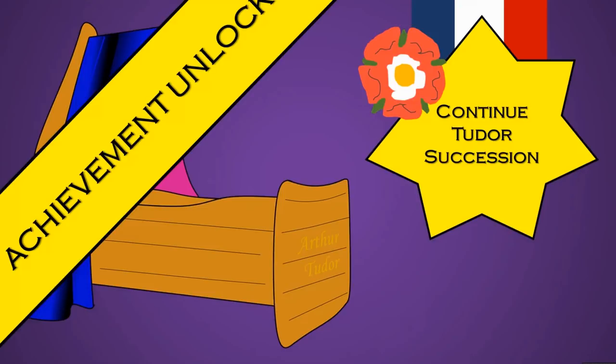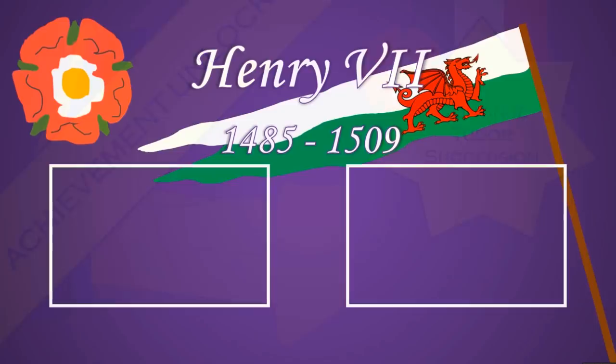On the 20th of September 1486 Elizabeth of York gave birth to their first child, whom they named Arthur after the mythical prince from the dark ages. This was a huge deal — they now had someone to succeed them. This has been part two on Henry VII, who ruled England from 1485 to 1501. If you enjoyed this video, a thumbs up would be appreciated, and feel free to comment below. The next episode will cover the rebellions against Henry VII, with two episodes planned per month.